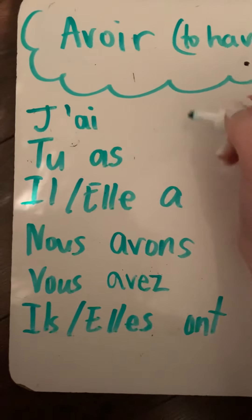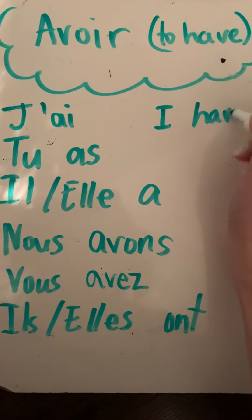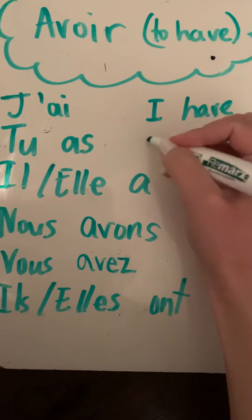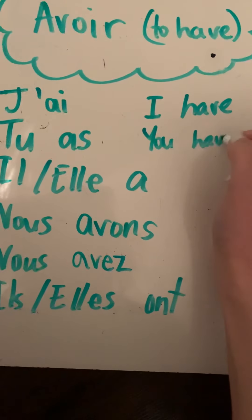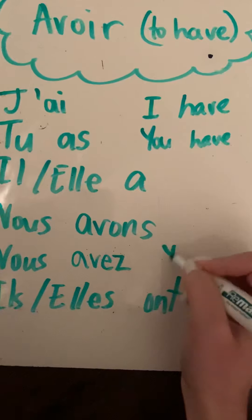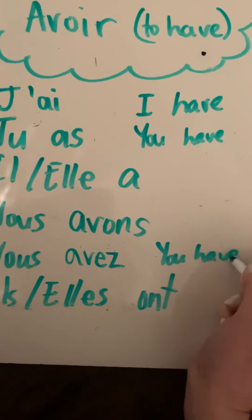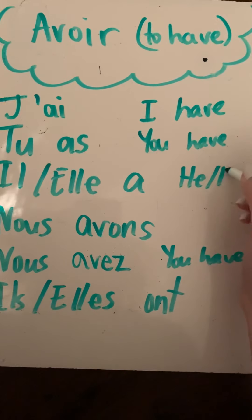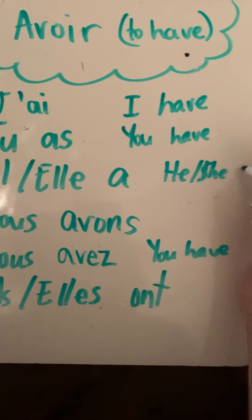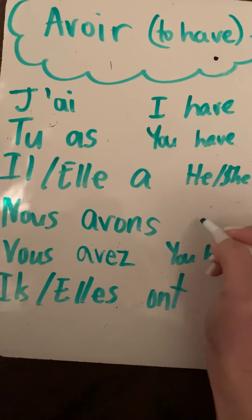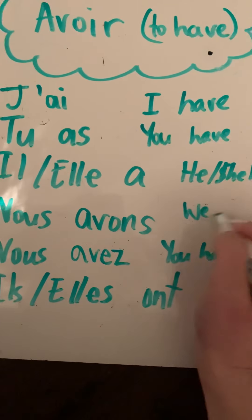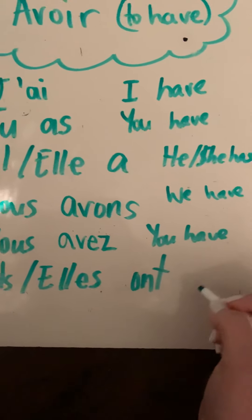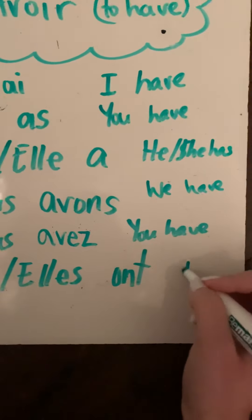Okay, so to recap: j'ai means 'I have.' You're more than welcome to copy this in a notebook, by the way. Tu as means 'you have.' Vous avez also means 'you have,' but it's the plural form. Il a or elle a means 'he or she has.' Nous avons means 'we have.' Vous avez — you have. And ils ont or elles ont means 'they have.'